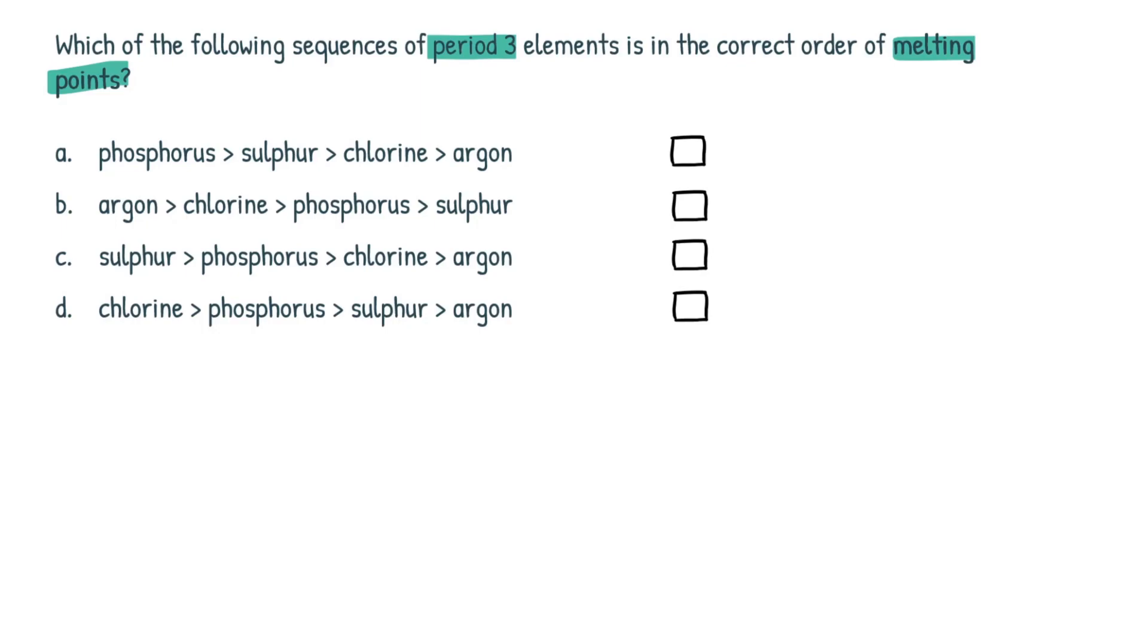Okay, so as we can see here, all the statements A, B, C and D all have this element is greater than this element, etc. Okay, so all of the sequences go from greatest to smallest. All right, that's the first point we have to consider.